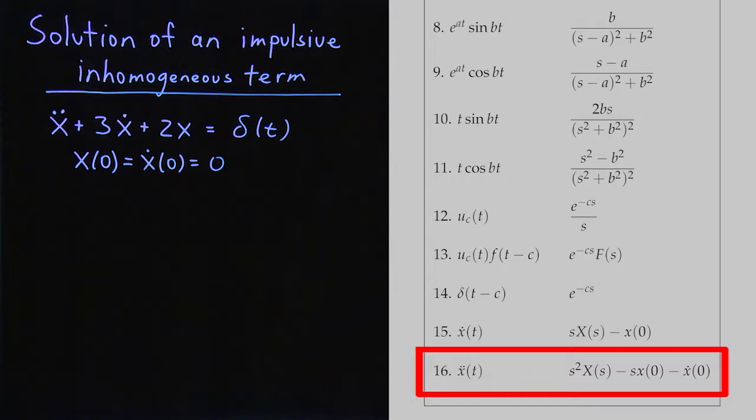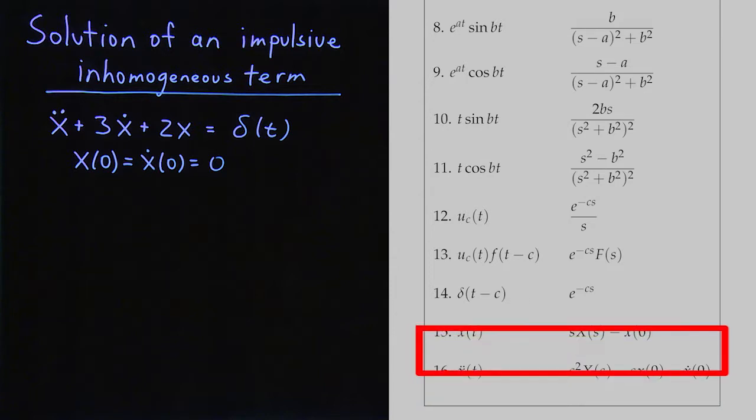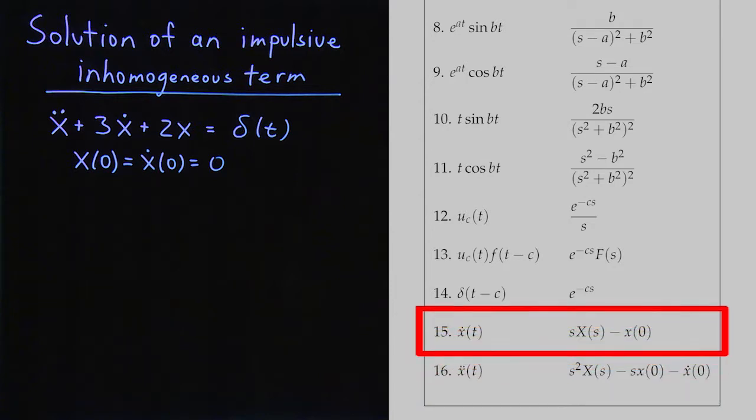So we get s squared times capital X. We apply line 15 to take the Laplace transform of the first derivative. So we have a 3x dot, so we end up with a 3s times x. And then we take the Laplace transform of 2x, which is just 2 capital X.